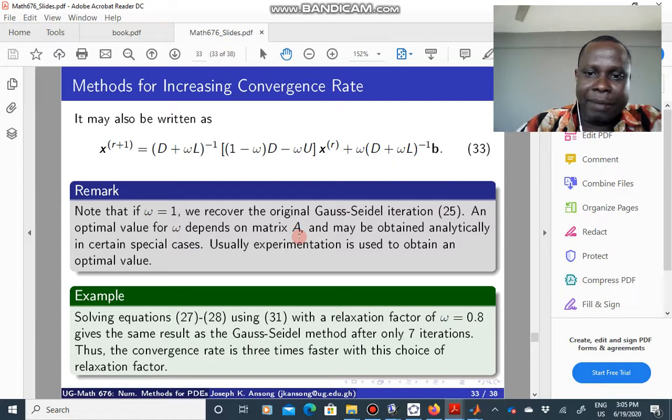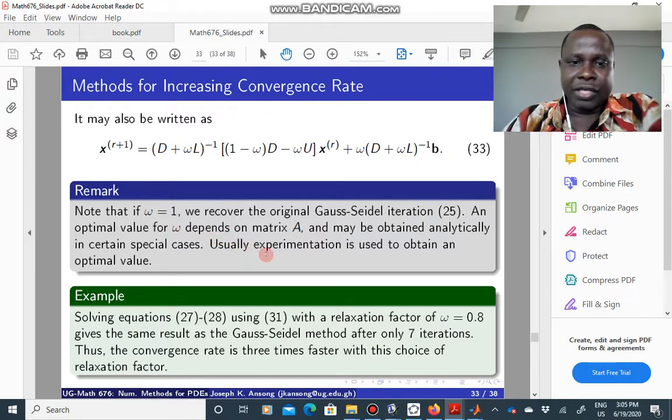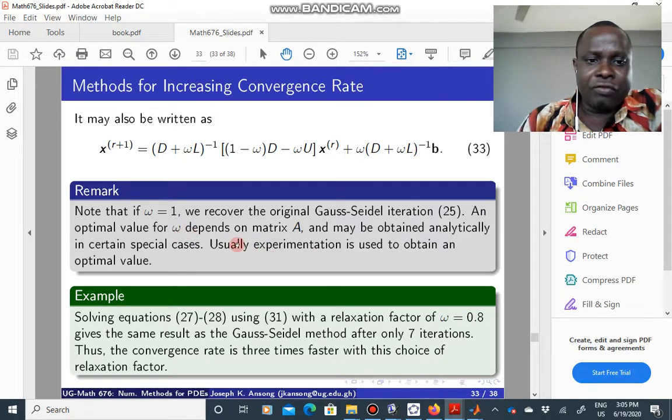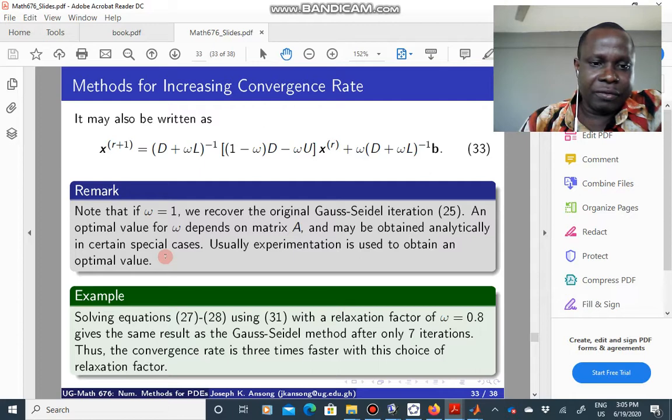And sometimes, in special circumstances, you can actually obtain this omega analytically. But from experience, mostly you have to do experimentation. Just experiment with different values of omega and see which one gives you the best convergence.